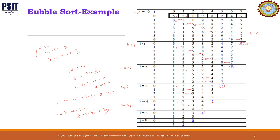Now k will be equal to 5. j runs from 0 to n minus k minus 1, that is 8 minus 5 minus 1, equal to 2 times — 0 and 1. We compare 1 and 2, no change. We compare 2 and 3, no change. Now the 6th largest element is at its proper place.